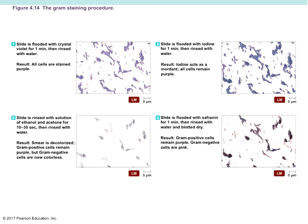Gram staining is one of the first things we do when trying to identify bacteria. First, we make a smear, make a fixed slide — put the specimen on, smear it, let it air dry, stick it through the Bunsen burner to fix it. Then we flood it with crystal violet and rinse with water. If we were to stop at this point, that would just be simple staining — everything on the slide would be all purple.